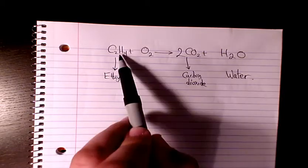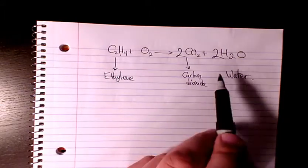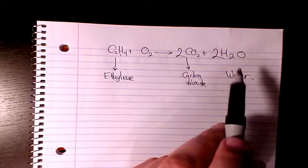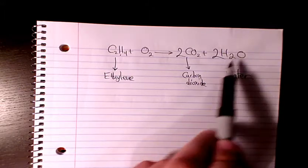Hydrogen, we have two and four, so it's going to be two. So two times two is four. Here we have four, so hydrogen is balanced also. What about oxygen?